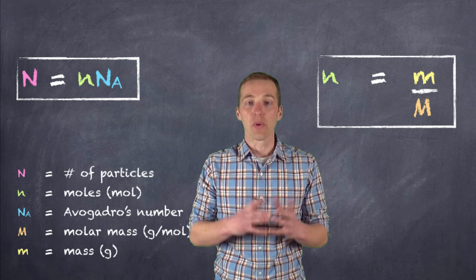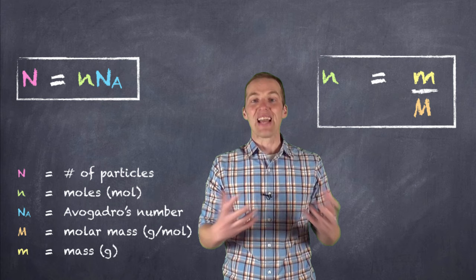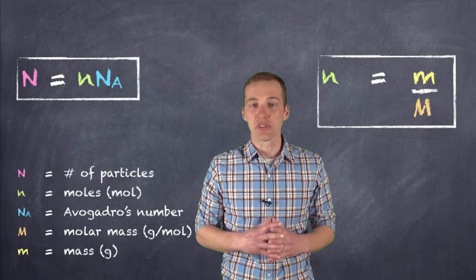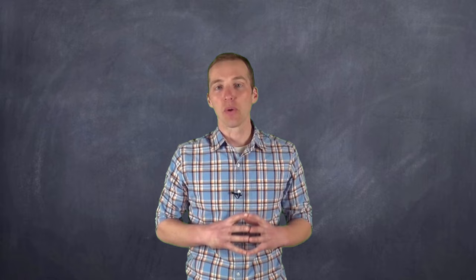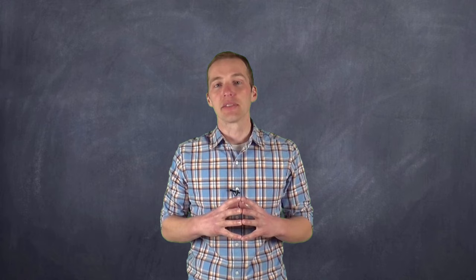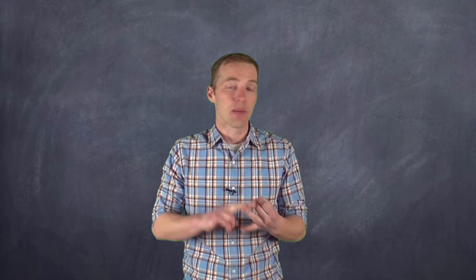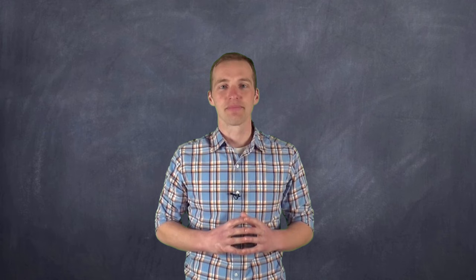We can also go the other way — if we have the total number of entities in a compound, we can figure out the mass or the number of moles. Hopefully after watching this video you have a better idea of why the value of a mole is necessary, just how small atoms actually are, how big the value of the mole is, and how to use these relationships to move between the number of particles, the number of moles, and ultimately the mass of a particular compound, or vice versa.